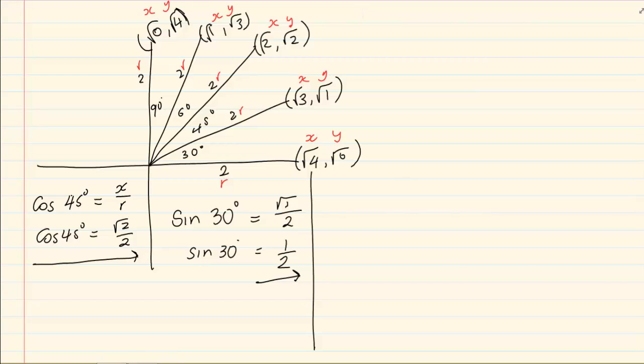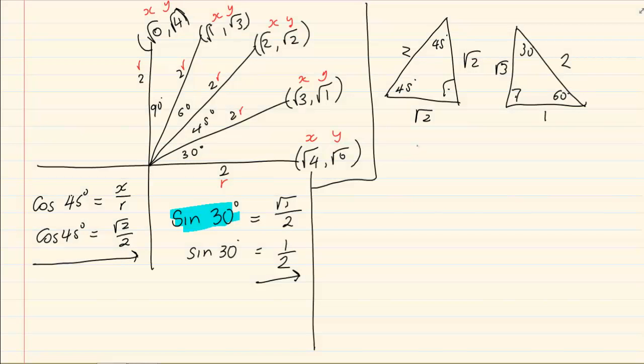Now another way of using special angles is instead of drawing the Cartesian plane you use 2 triangles. If I was going to do sin of 30 degrees, I know sin is O over H. So I choose my 30 degree. O is 1 and H is 2 giving me the same answer. But now I have used the special angles triangles.